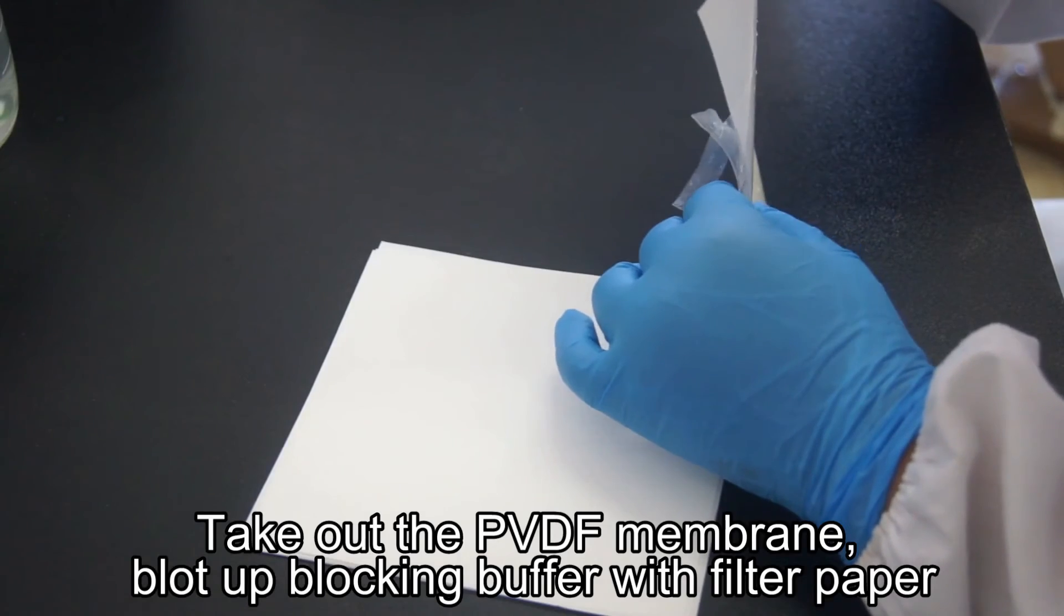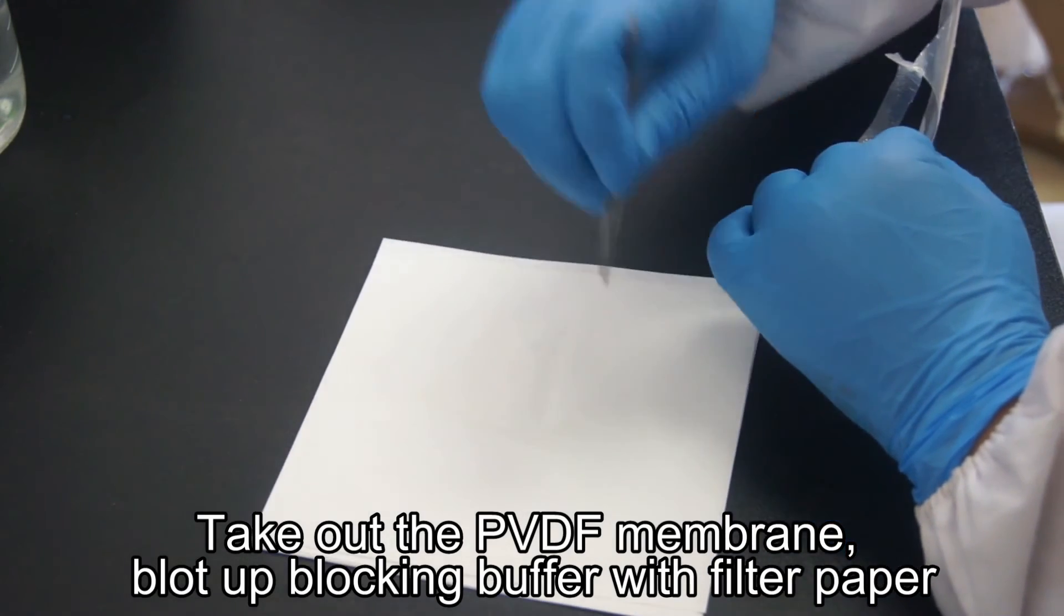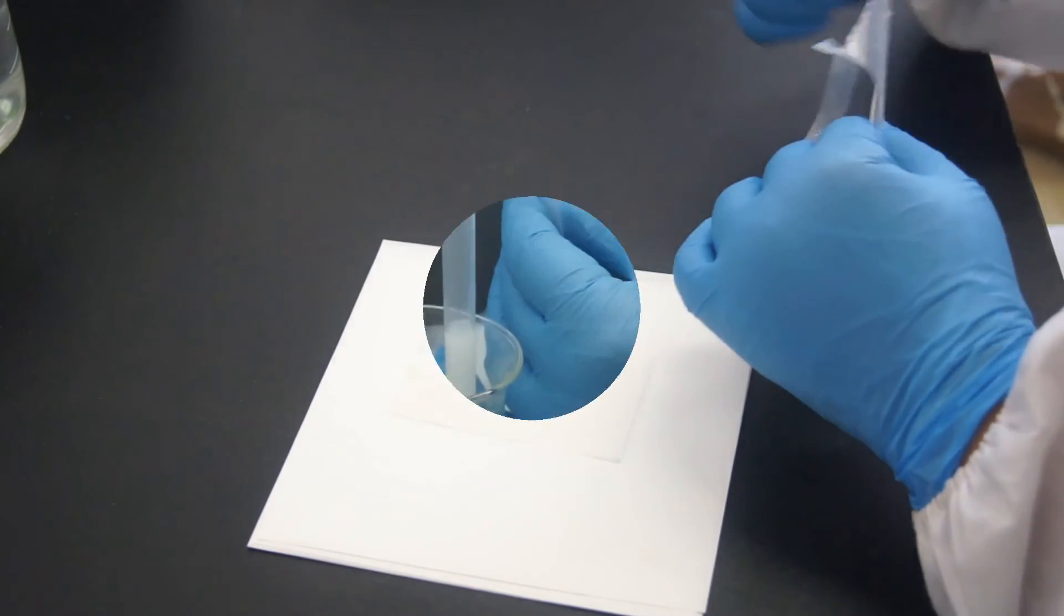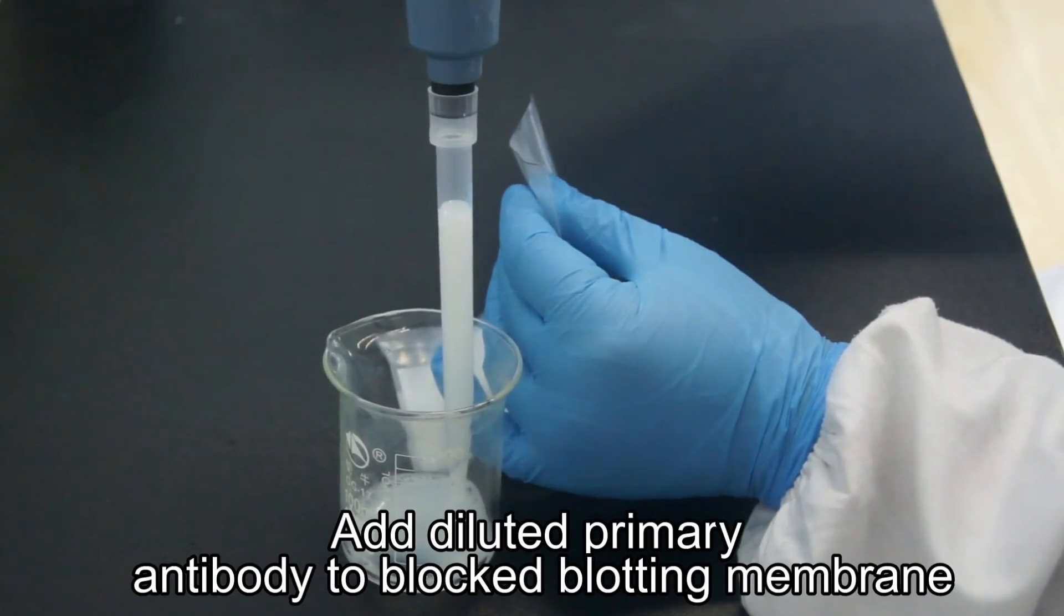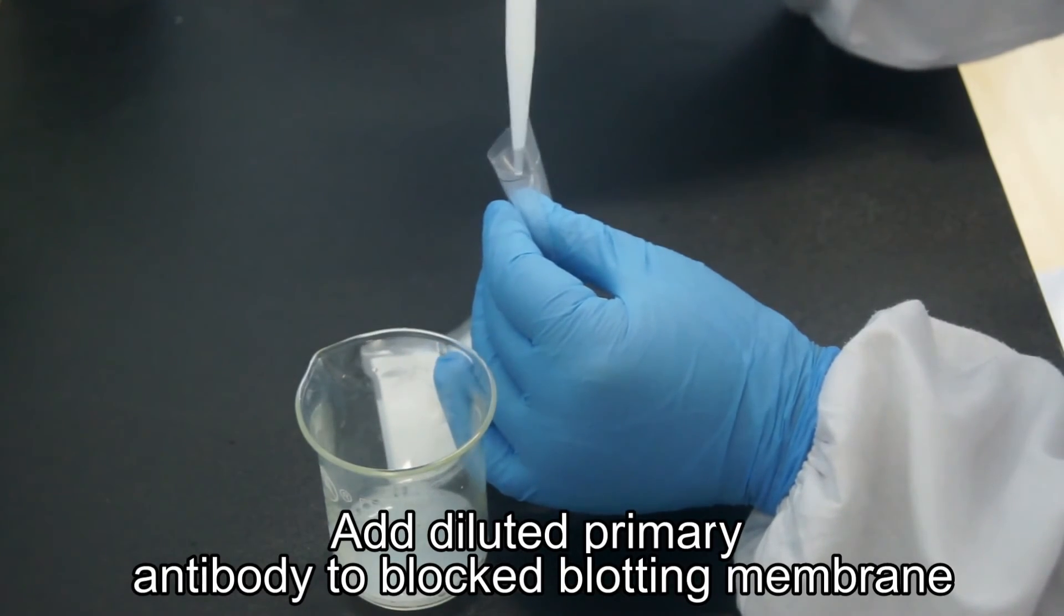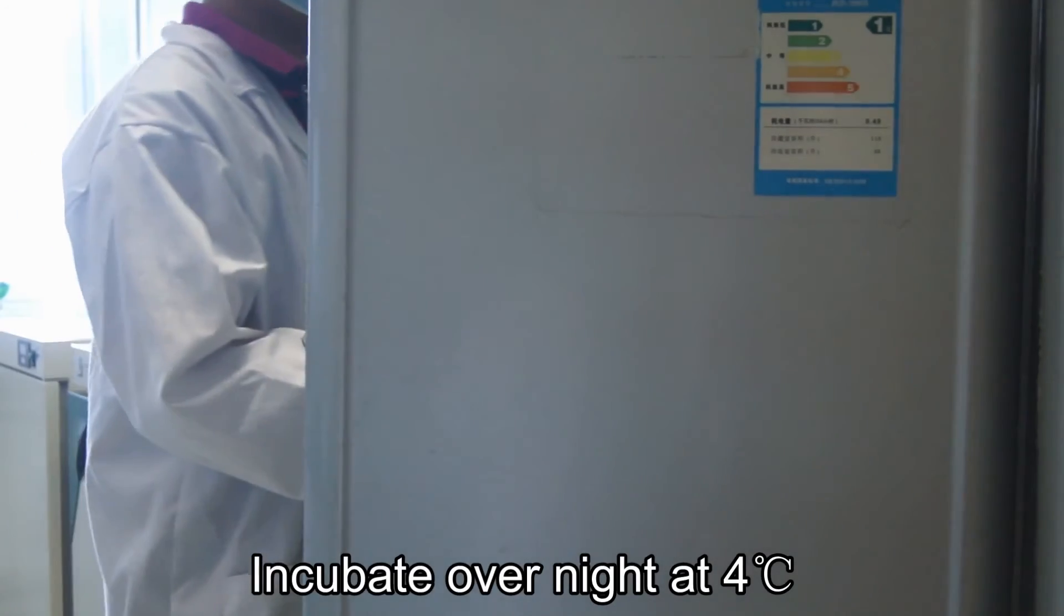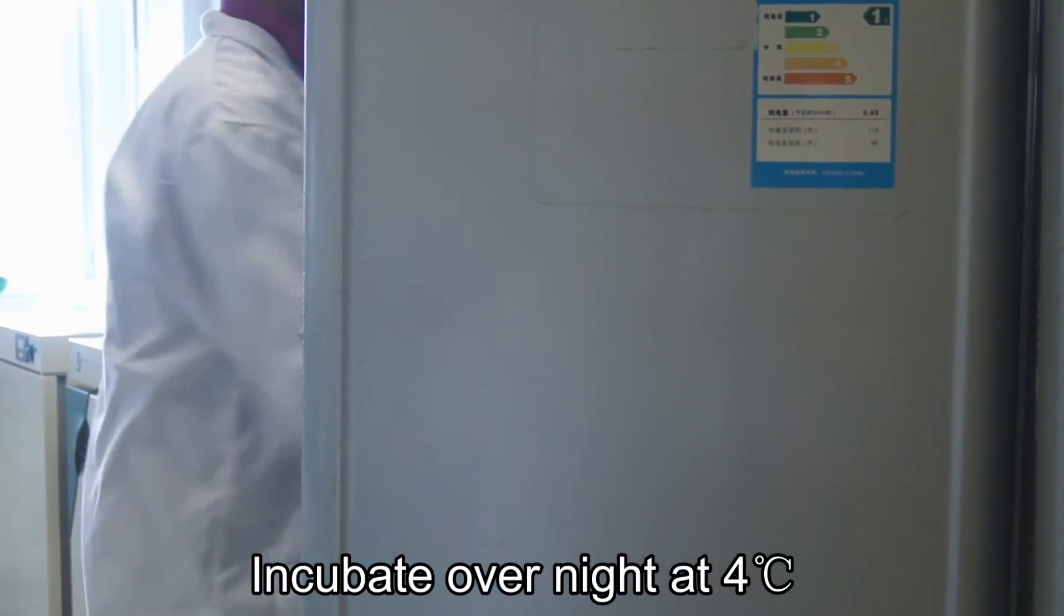Primary antibody incubation: Take out the PVDF membrane after blocking. Blot the transfer buffer up with filter paper. Add diluted primary antibody at the suggested dilution to the blotted membrane. Incubate overnight at 4 degrees centigrade.